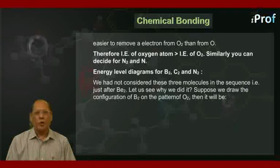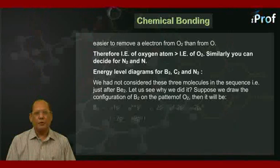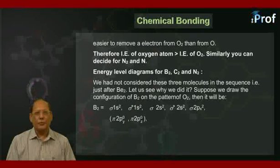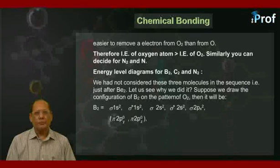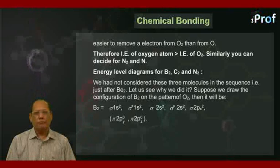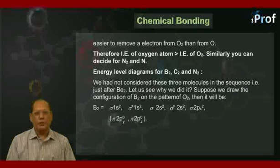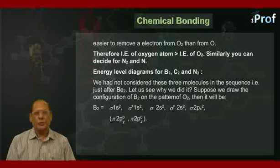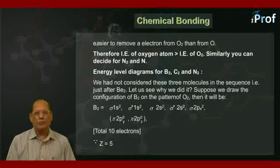Suppose we draw the configuration of B₂ on the pattern of O₂, then it will be B₂ equal to σ1s², σ*1s², σ2s², σ*2s², σ2pₓ² and thereafter set of degenerate orbitals π2pᵧ⁰, π2pᵤ⁰ because total number of electrons with the B₂ molecule will be 10 as atomic number of boron is 5.